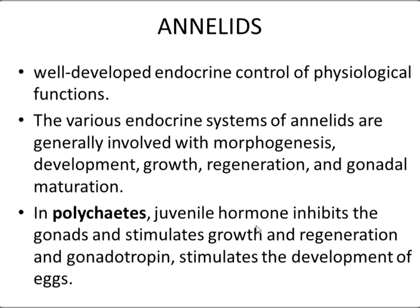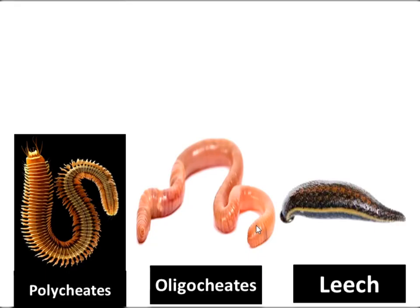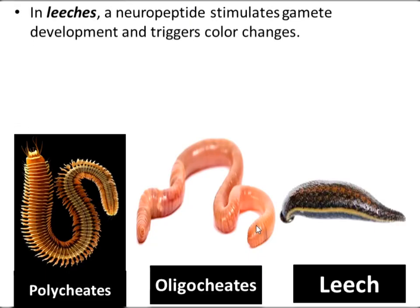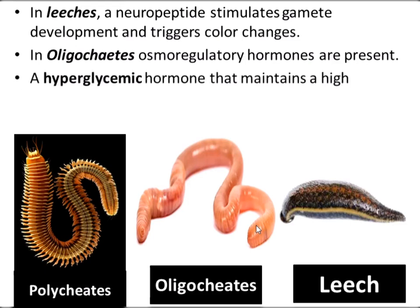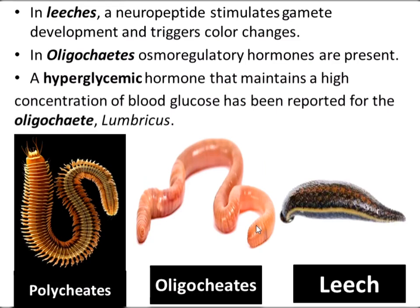Gonadotropin stimulates the development of eggs. In leeches, a neuropeptide produced from neurosecretory cells stimulates gamete development and triggers color changes. In oligochaetes, osmoregulatory hormones are present. A hyperglycemic hormone found in oligochaetes and Lumbricus is responsible for maintaining high concentration of blood glucose.